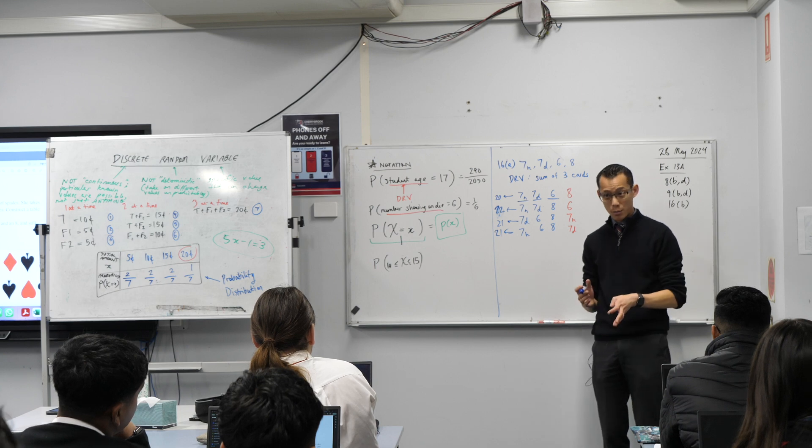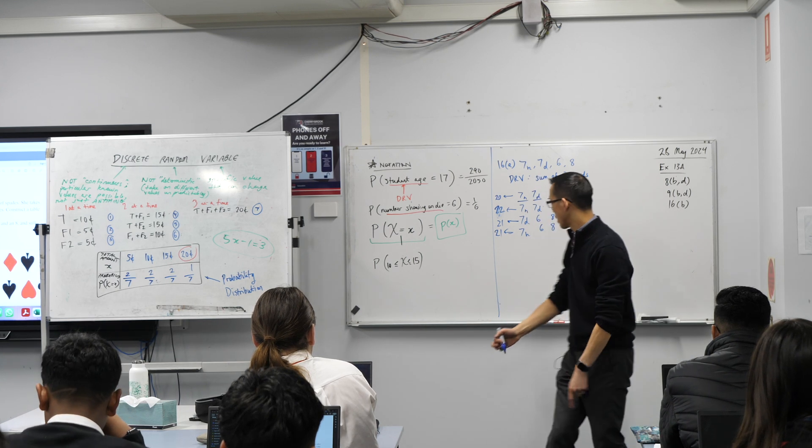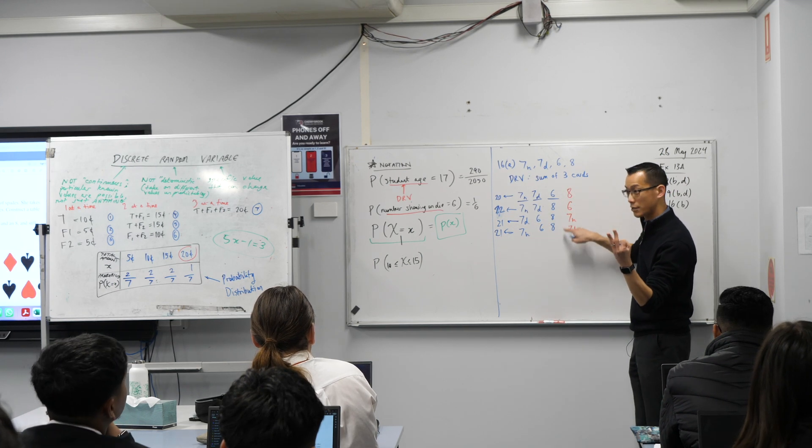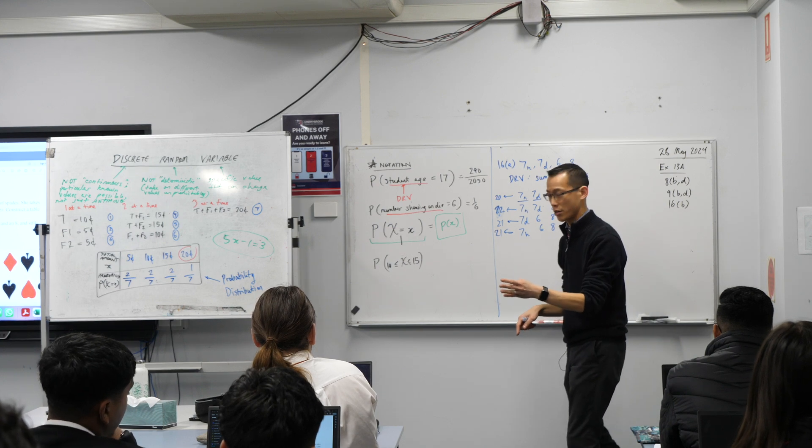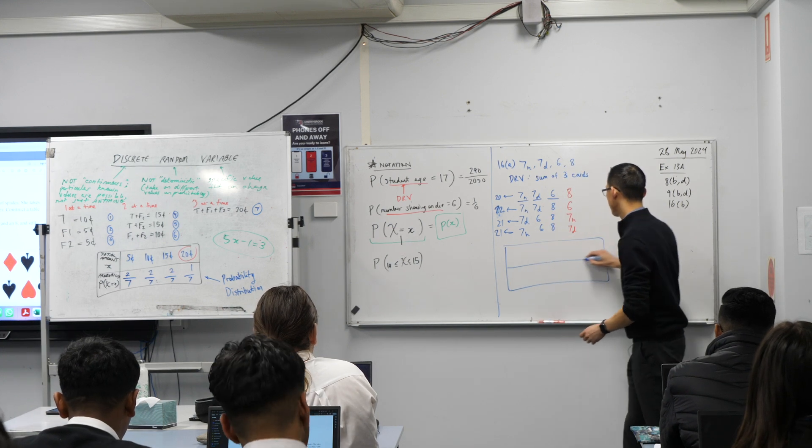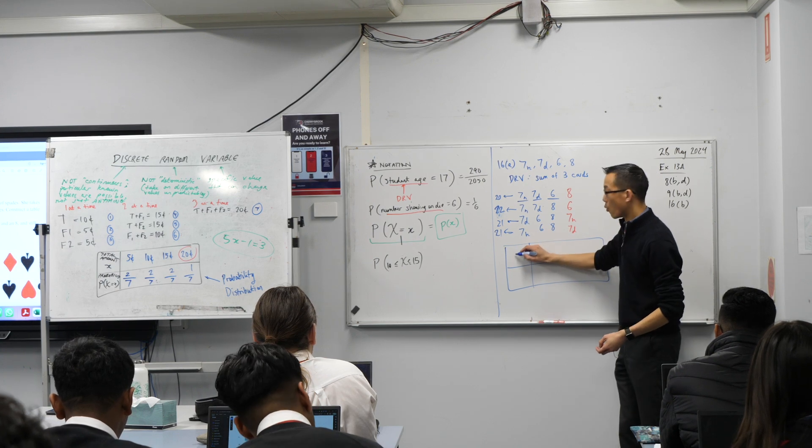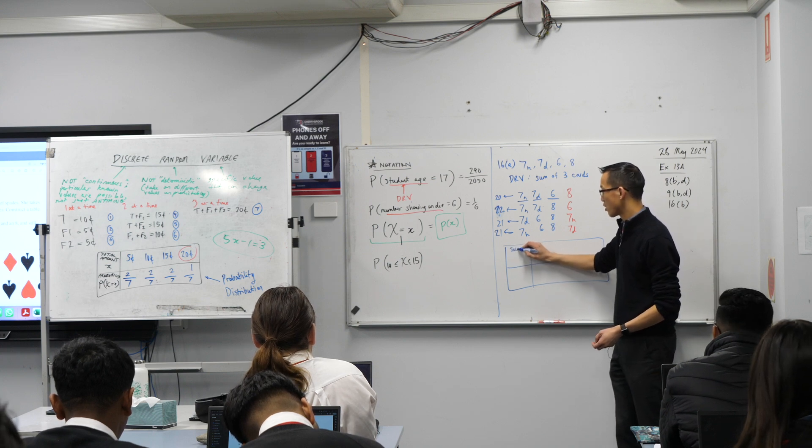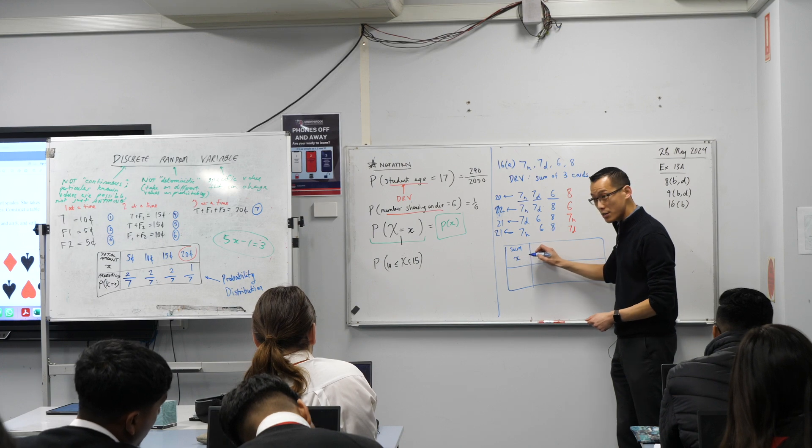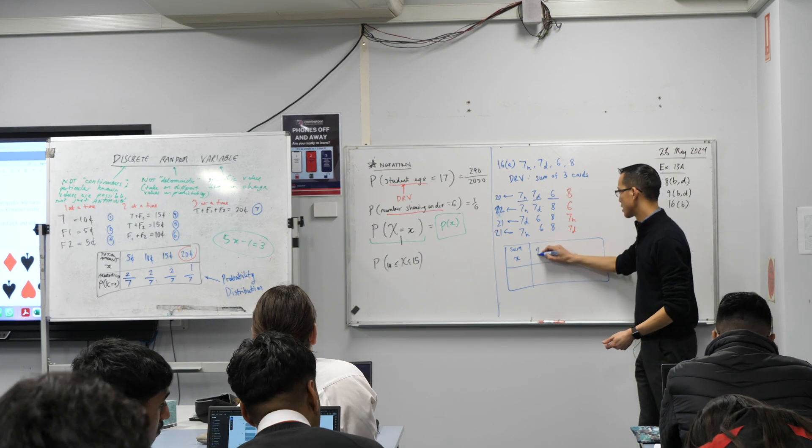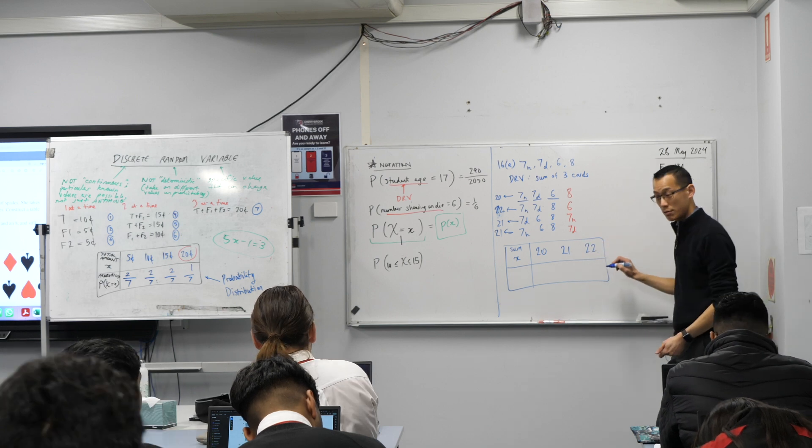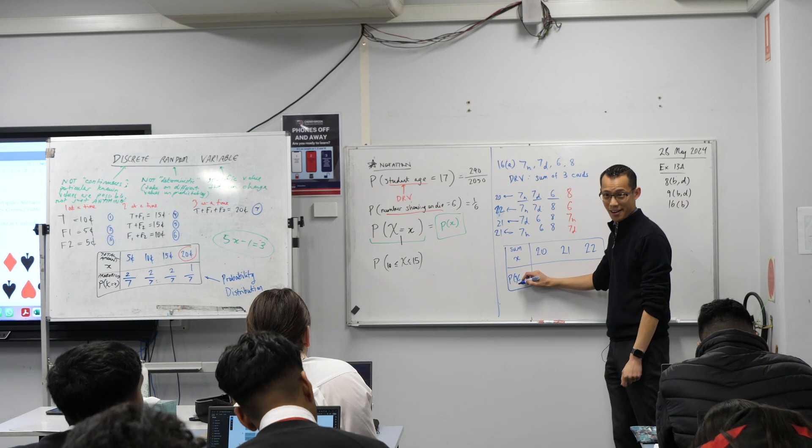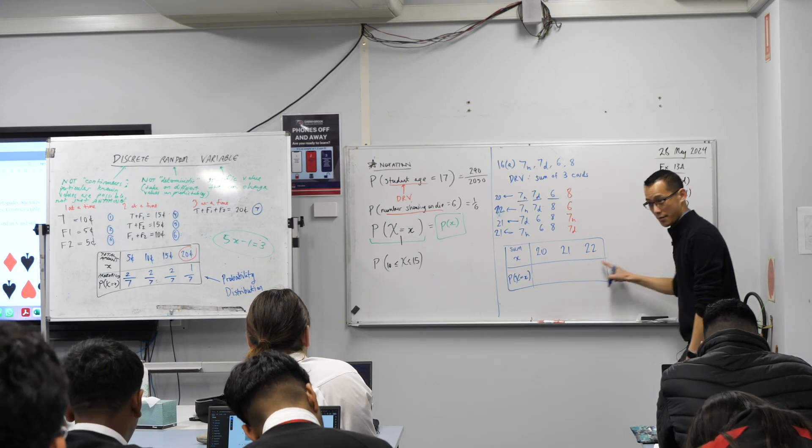So our discrete random variable, as we said before, it can't just take on any value. It can only take on one of these three values. Four possibilities, but only three things that the discrete random variable can be. So now I'm ready to draw my table. Like so. What do we call this thing up the top? Well, we could call it the sum, the total, but I denote it with a little x because that's the particular values you can take on. Let's put them in order: 20, 21, 22. And then down here, I have my probability that the discrete random variable is equal to these particular values.